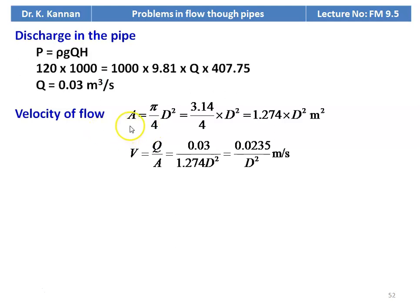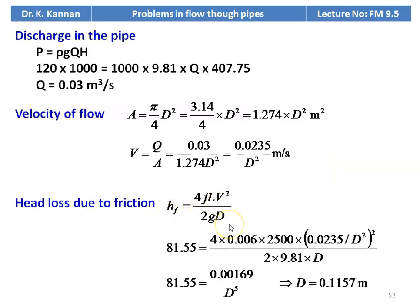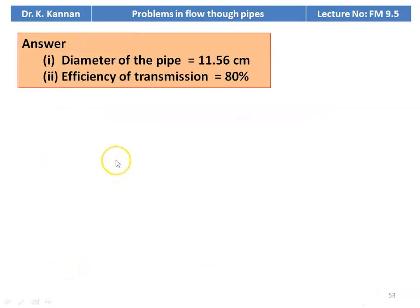Velocity of flow: area A equal to pi by 4 D square, equal to 0.785 D square. Velocity equal to Q by A, equal to 0.03 divided by 0.785 D square, which is 0.0382 divided by D square meters per second. Head loss HF equal to 4FLV square by 2GD. Substituting HF equal to 81.55, F equal to 0.006, L equal to 2500, and the velocity expression, simplifying: 81.55 equal to 0.00169 divided by D to the power 5. Diameter of the pipeline equal to 0.1157 meter. The answer: diameter of the pipe is 11.57 centimeter and efficiency of transmission is 80 percent.